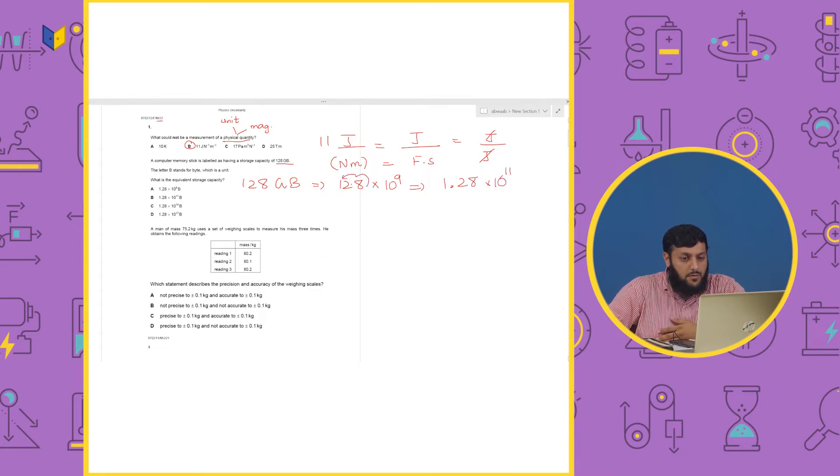Because this will be decimal by two places. So, 1.28 exponent 11.